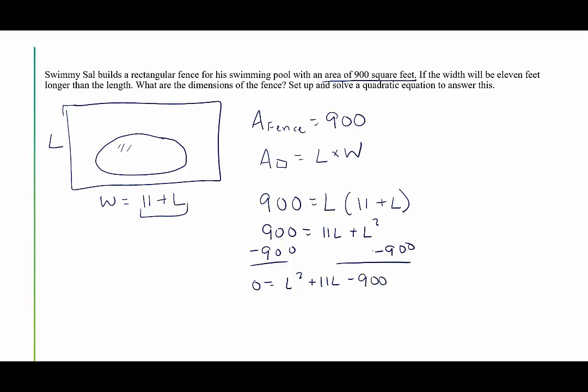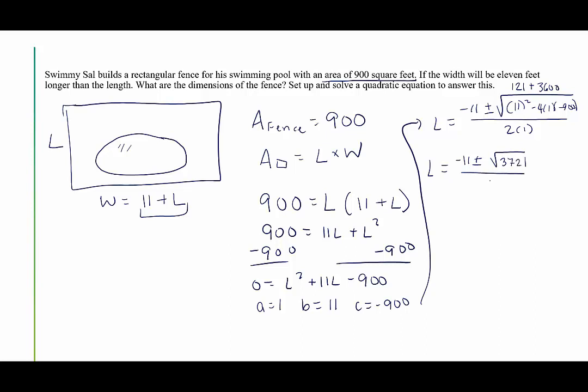Now I think this might be factorable, but 900 has a ton of factors. So I think it will be faster for me just to use the quadratic formula. In this case, A is equal to 1, B is equal to 11, and C is equal to negative 900. Let's plug into the quadratic formula. In this case, we're going to say L equals negative B plus or minus the square root of B squared minus 4 times A times C, all divided by 2A. We're going to clean up under the radical. We're going to clean up that discriminant. That's negative 11 plus or minus the square root. 11 squared is 121. We have two negatives that can make plus. 4 times 1 times 900 is 3600. So under the radical, we end up with 3721. All of this is divided by 2.